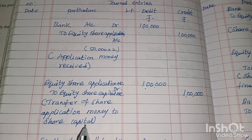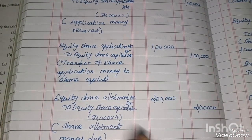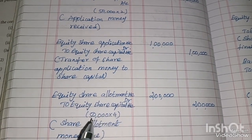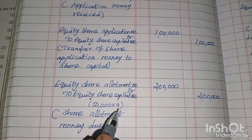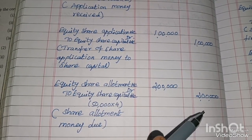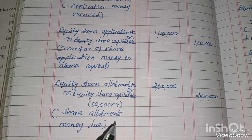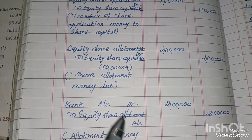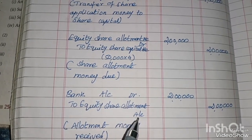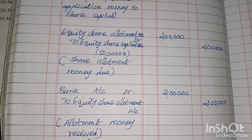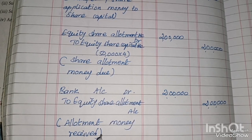Entry 3 — Allotment due: Equity Share Allotment Account Dr. to Equity Share Capital Account — 50,000 × Rs. 4 = Rs. 2,00,000. Narration: Share allotment money due. Entry 4 — Allotment received: Bank Account Dr. to Equity Share Allotment Account — Rs. 2,00,000. Narration: Share allotment money received.